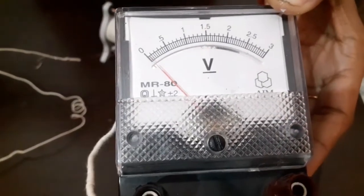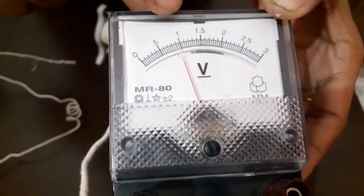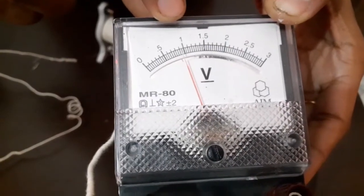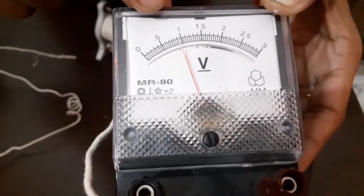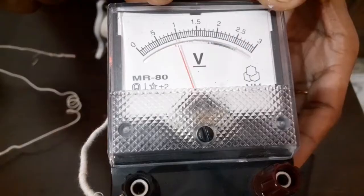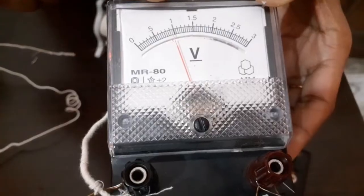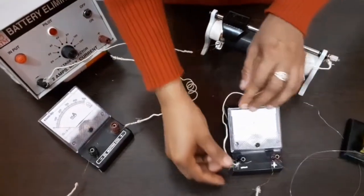If I turn it on and bring it to a certain position, it has reached to 18 divisions. So if it has reached to 18 divisions, 18 multiplied by 0.05 and it will be 0.9 volt. This device is connected in parallel.